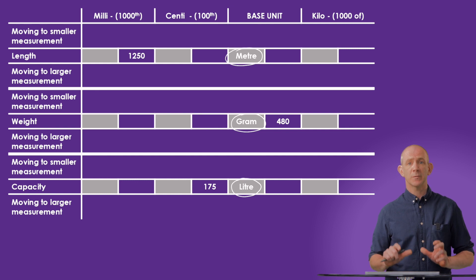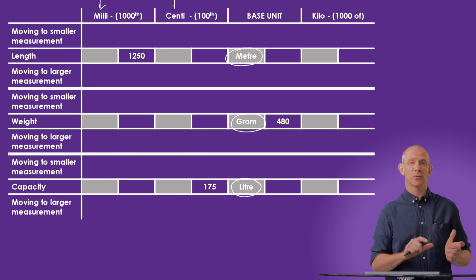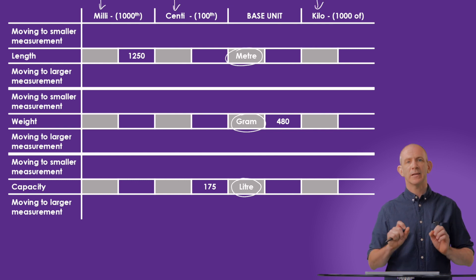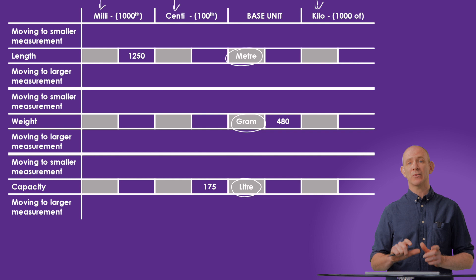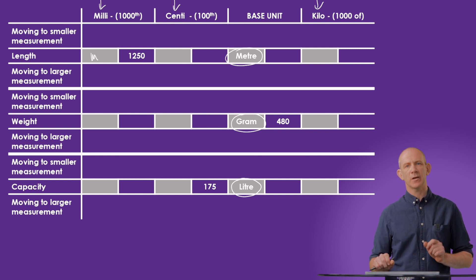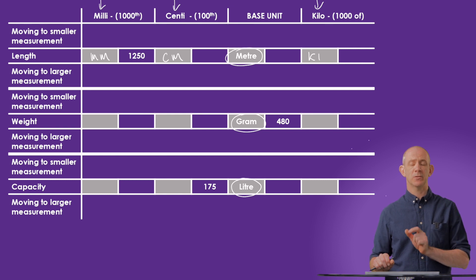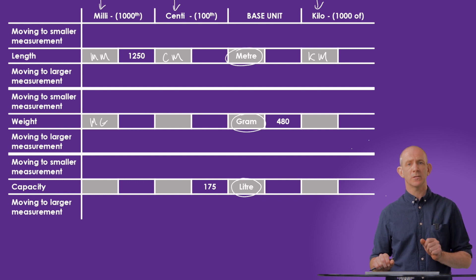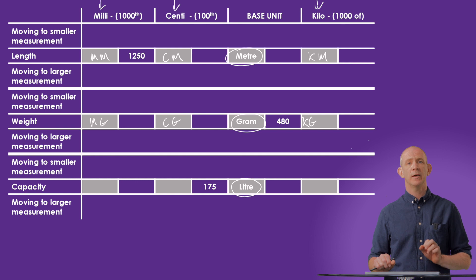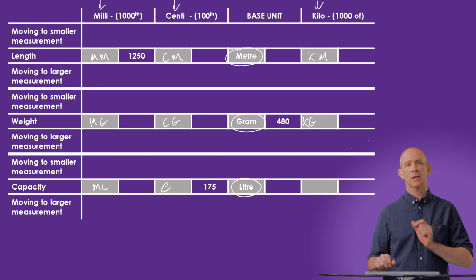For each of these types of measurements, we use 'milli' to represent a thousandth, 'centi' to represent a hundredth, and 'kilo' to represent a thousand of the base measurement. For length, we get millimeters, centimeters, and kilometers. For weight, we get milligrams, centigrams, and kilograms. For capacity, we have milliliters, centiliters, and kiloliters.